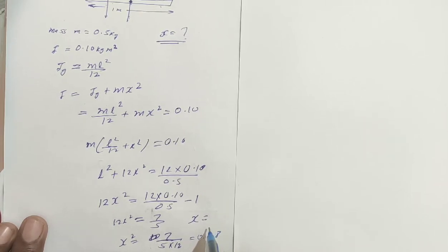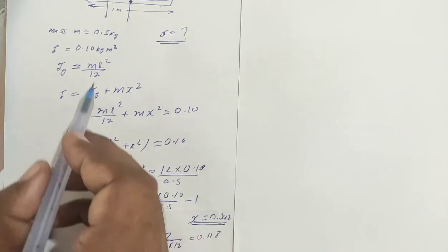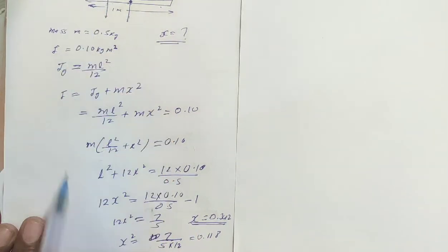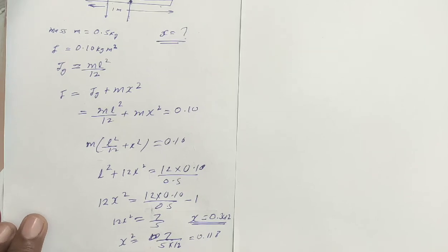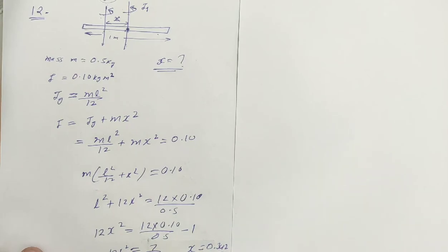And when we take root of 0.118, the answer will be 0.342. How much? 0.342. And this distance is from where? From the midpoint. Clear? If you want video solution of any question, please subscribe to the channel. Whatever question you have, comment the question number and chapter number in the comment box.